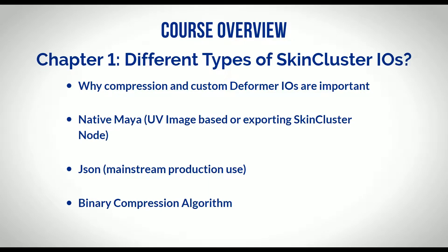Let's talk about why compression and custom deformer IOs are important. What's an IO? It stands for input and output. In the relationship of deformers, it's basically how we send data from Maya to something outside Maya — like storing it on disk — and how we bring it back in from files on disk into our Maya scene and onto our objects.